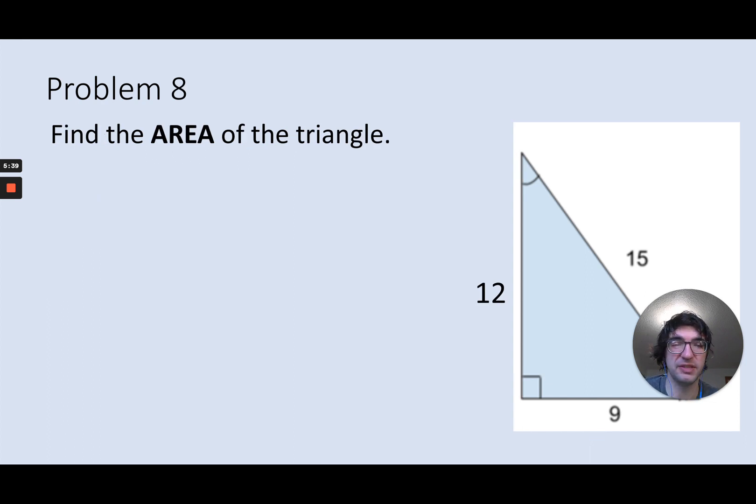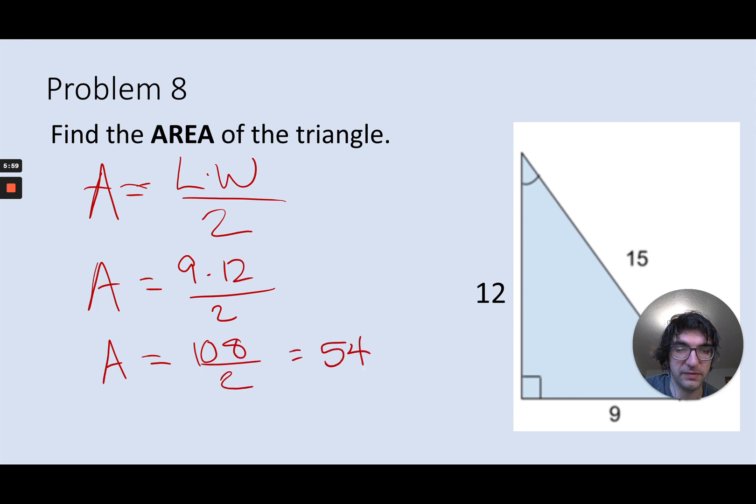Okay, a couple other skills we do want to make sure we've got down. Can you find the area of this triangle? The area of a triangle is length times width divided by two, so I'll just say nine times twelve divided by two. You can try in your head, you can go on a calculator, just whatever works best for you. That would be 54 square units.